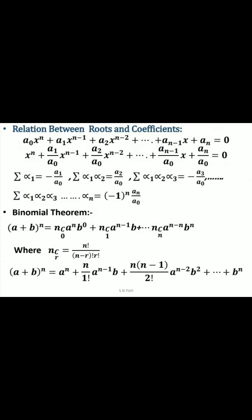Let us generalize this. Consider an nth degree polynomial having coefficients a0, a1, up to an, where the constant term is an. We divide throughout by a0 to get the simplified form: x to the n plus a1 upon a0 times x to the n minus 1 plus a2 upon a0 times x to the n minus 2, and so on, plus an upon a0 equals 0. This nth degree polynomial has n roots: alpha 1, alpha 2, up to alpha n. The sum of all roots equals minus times the second coefficient, which is a1 upon a0.